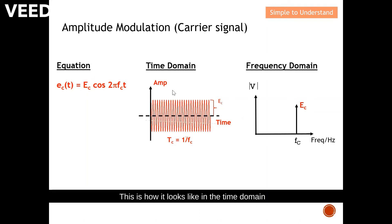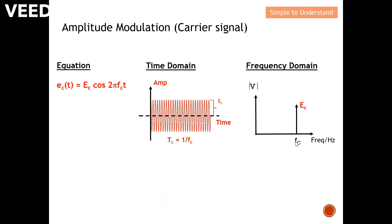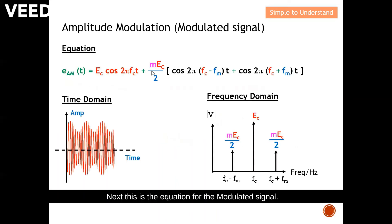Next, for the carrier signal, this is the carrier equation and how it looks in the time domain — with a higher frequency compared to the modulating signal. In the frequency domain, there is again only one term, with amplitude ec at frequency fc.